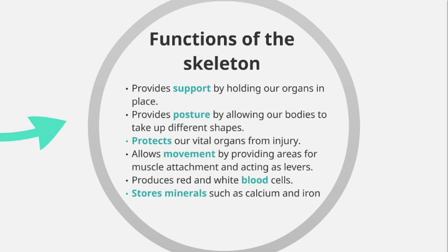The skeleton provides support by holding our organs in place. Within our rib cage we have the heart, lungs, liver, and kidneys, all tightly packed together and held in place by our skeleton. Without it, our organs would move around when we move. The skeleton also provides posture, allowing our bodies to take up different shapes. In sport, for example in gymnastics, taking a free kick in football, or passing in rugby, you must adopt certain shapes to perform skills — and this is made possible by our skeleton providing posture.